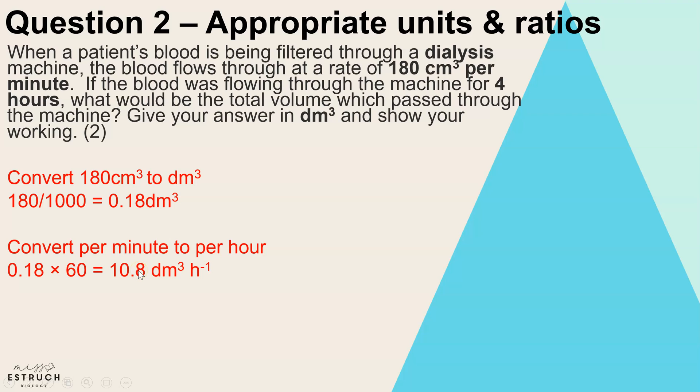So we now know that in one hour the volume of blood passing through the machine is 10.8 decimeters cubed. However, we have four hours, so the final step is to multiply that answer by four and we get 43.2 decimeters cubed.